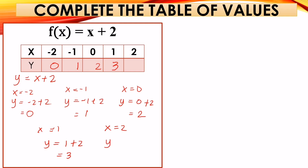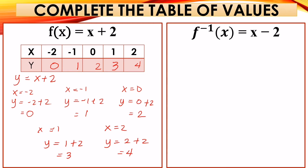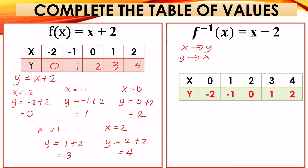That gives us the table of values for f(x) = x + 2. For the inverse, remember that the old X values of the function become the Y values of the inverse, and the old Y values become the X values of the inverse. So the X values of the inverse are 0, 1, 2, 3, 4 — the old Y values — and the Y values are −2, −1, 0, 1, 2 — the old X values.